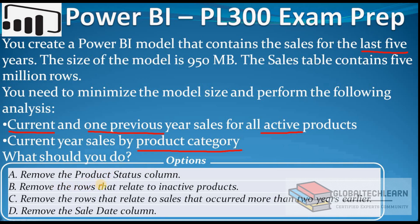The first option is remove the product status column. If we remove it, we won't be able to achieve the first analysis, since we need to filter for active products. So this option will not work. The second option is remove the rows that relate to inactive products. If we remove inactive products, we can achieve the first analysis since it needs only active products. However, the second analysis does not specify filtering on product status, meaning we need both active and inactive products there. So this option also will not work.